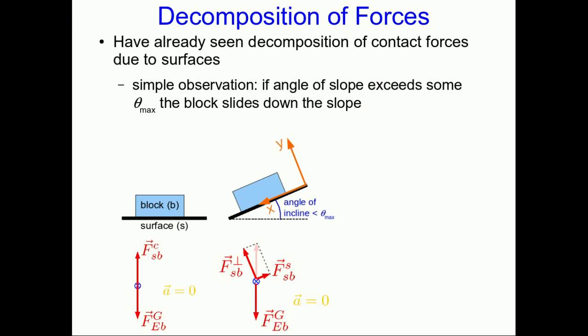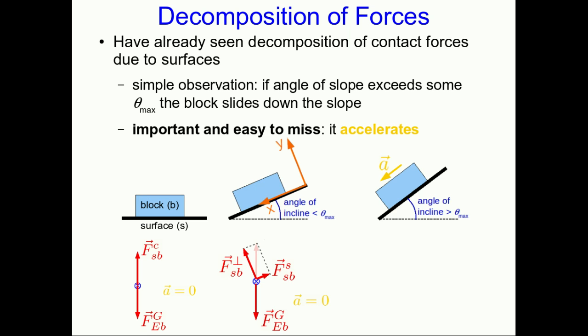This seems like a simple enough observation. If the angle of the slope exceeds some angle that we might as well call theta max, the block slides down the slope. But what's not quite so simple, and is often overlooked, and is really important, is that it accelerates down the slope. That's going to turn out to have some major implications. Let's think about it more carefully.